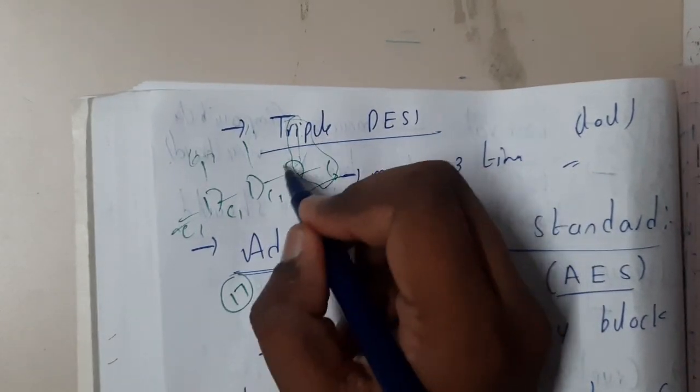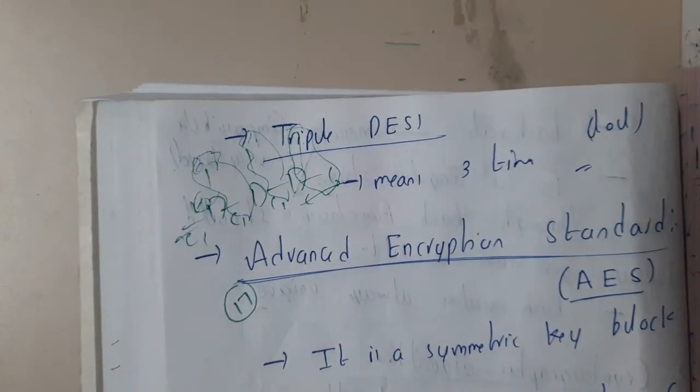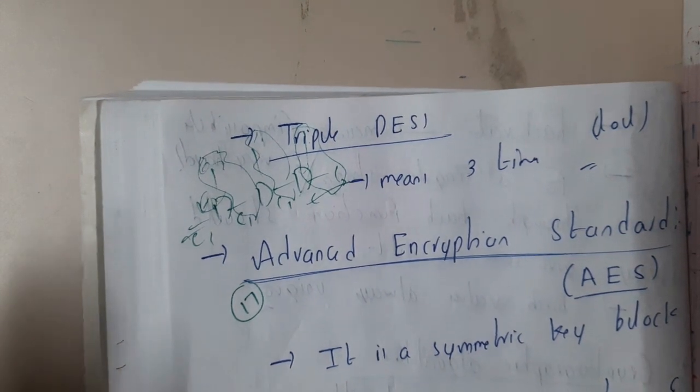In the reverse process, first you will be combining with the K3, then this result you will be combining with the K2, then this result you will be combining with K1 to get the final result. I hope everyone got some basic idea on the DES algorithm, double and triple.